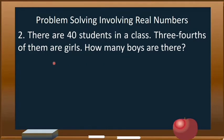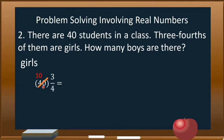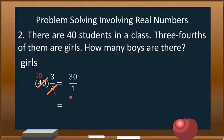First we have to solve for the number of girls. We multiply 40 by the fractional part of girls, which is 3/4. So 40 times 3/4 — we can cancel 40 and 4 because they are divisible by 4. 40 divided by 4 is 10 and 4 divided by 4 is 1. We multiply numerator times numerator over denominator times denominator: 10 times 3 equals 30, over 1 times 1 equals 1. And 30 over 1 in simplest form is 30.